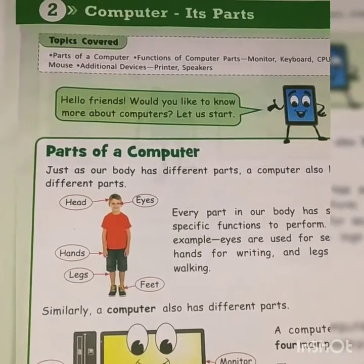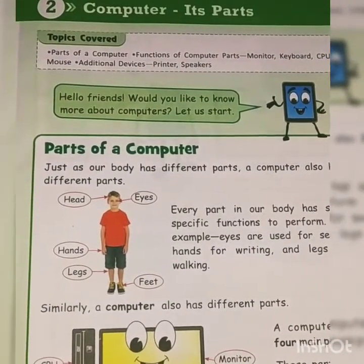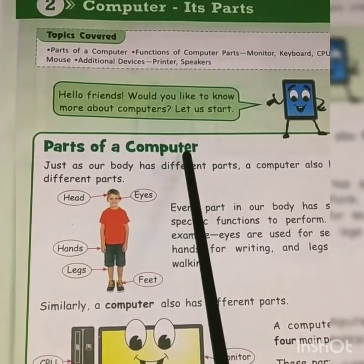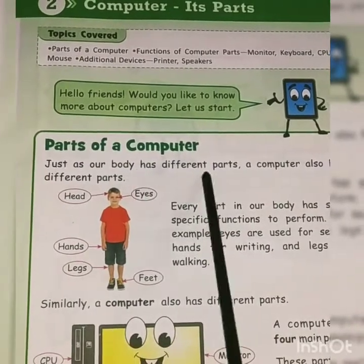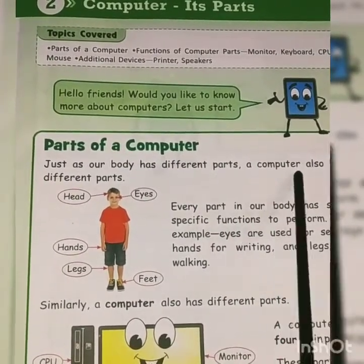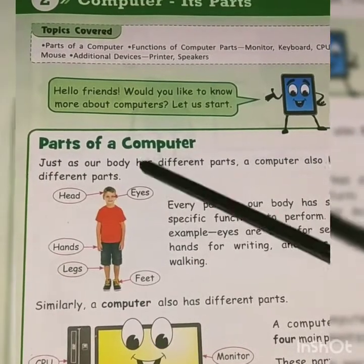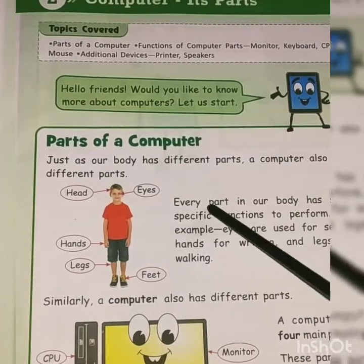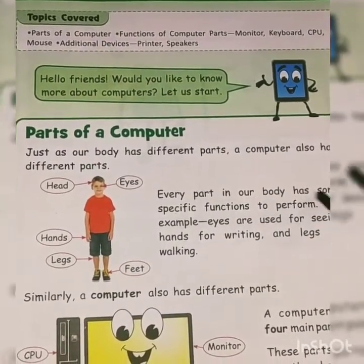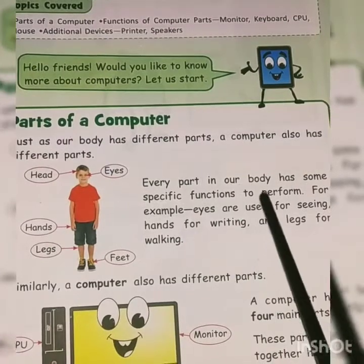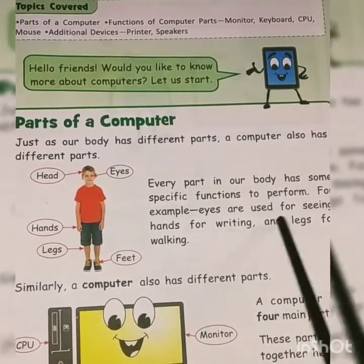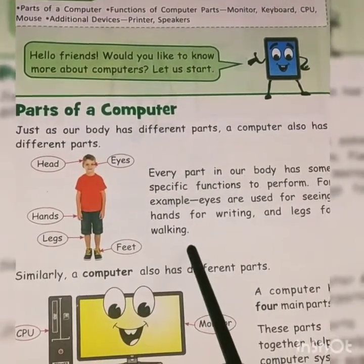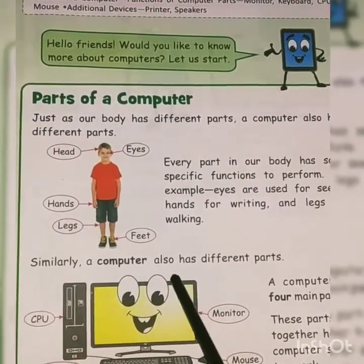The computer is saying, let's start to know more about me. First of all, parts of a computer — just like our body has different parts, a computer also has different parts. Our body has eyes, head, hands, legs, and feet, and every part of our body has some specific function to perform. For example, eyes are used for seeing, hands for writing, and legs for walking.